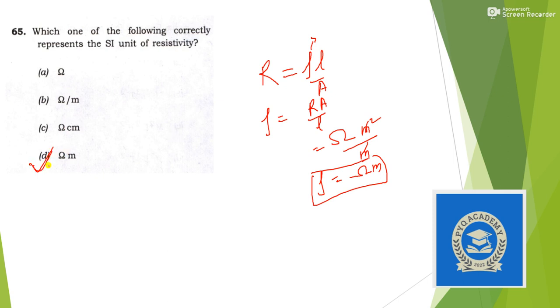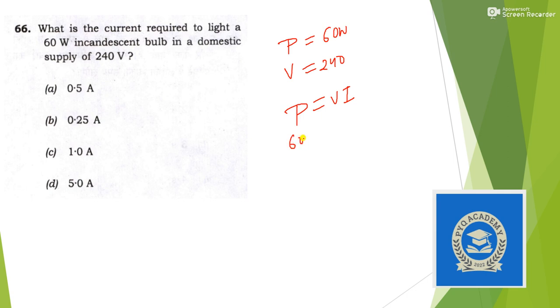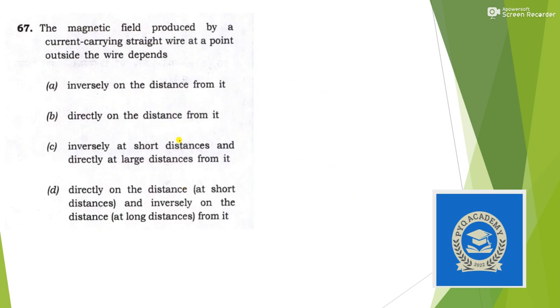Next: what is the current required to light a 60 watt incandescent light bulb on a domestic supply of 240 volt? Using P = VI: 60 = 240 × I, so I = 60/240 = 1/4 = 0.25 ampere. Answer is option B.